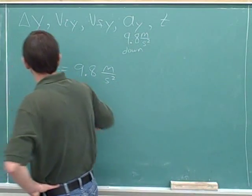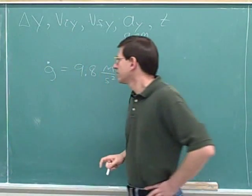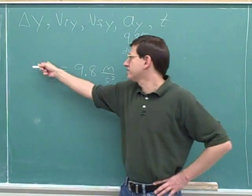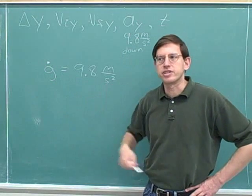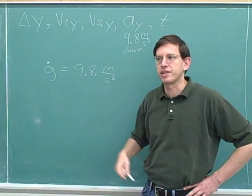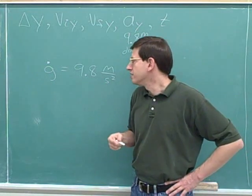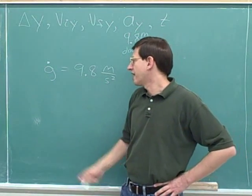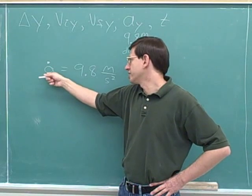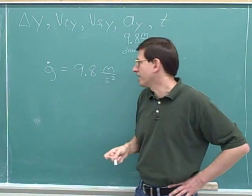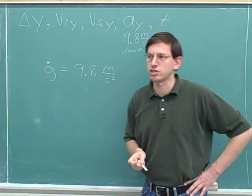I'm going to use that over here. Again, this dot is just a symbol that I invented — you won't see it in the textbook, but I think it's useful. This tells us that the magnitude of g is 9.8 meters per second squared.